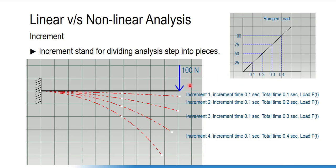The load is not applied instantaneously; a ramp-type load is assumed by Abaqus Standard. If you apply a 100 Newton load, it divides that load into pieces with respect to time — force is a function of time. This is the general idea, but it is not necessary that Abaqus pieces the load in a similar manner. If you have a variable load, it will be a function of time in different ways.